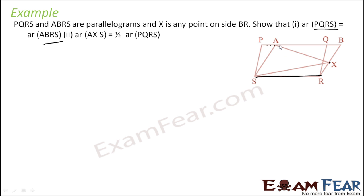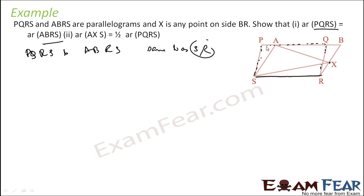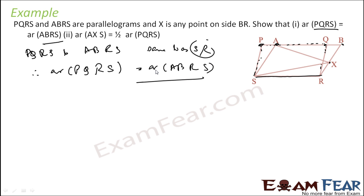If you see parallelogram PQRS and the other parallelogram, they have the same base SR. If you take these vertices and join them, they come together and this line is actually parallel to SR. Because PQ is parallel to SR and AB is parallel to SR, therefore by our theorem, area of PQRS equals area of ABRS since they are parallelograms on the same base SR between the same parallels.